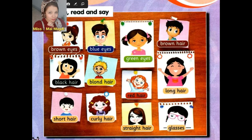It's time for new vocabulary. Let's start. Repeat after me. Number one: Brown eyes. Repeat after me — brown eyes. Again, brown eyes. What is the meaning of brown eyes? Brown eyes — يعني عيون بنية. Okay, repeat after me: brown eyes. Excellent!